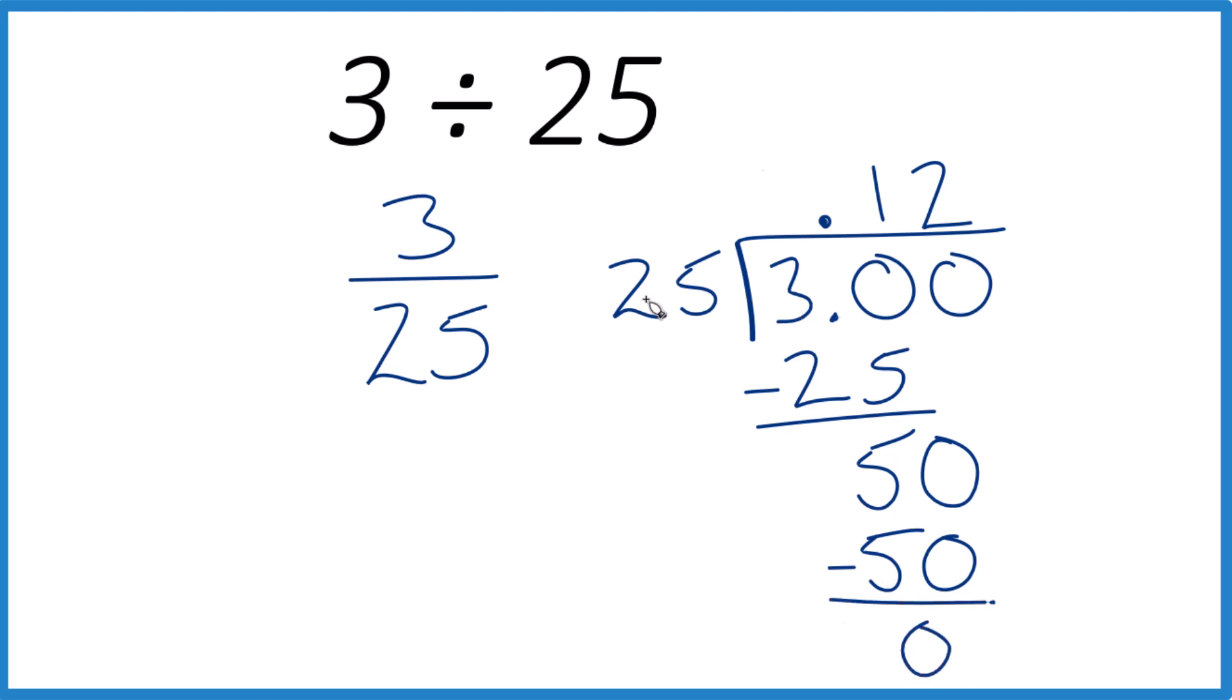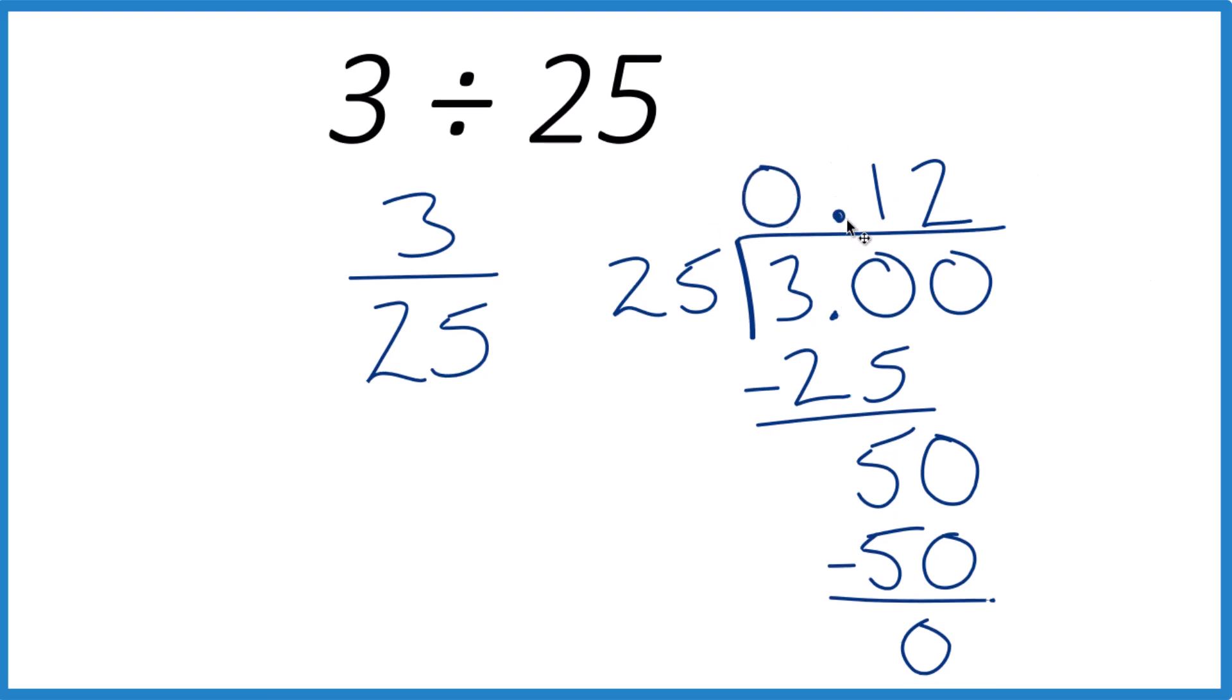So 3 divided by 25. We get 0.12. Often we put a zero here just so it's clear it's a decimal. If you multiply 0.12 times 25, you will get 3. Kind of makes sense.